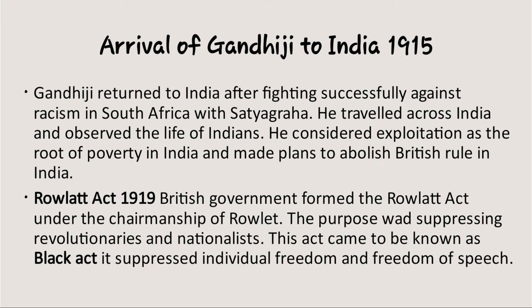The first point is the Rowlett Act. The British government formed the Rowlett Act under the chairmanship of Mr. Rowlett, the Minister of Law, in 1919. As per his suggestion, they framed a law to suppress revolutionaries and nationalists. Whenever a person or group was conducting such activities, they could be arrested and put into jail without any trial. Gandhiji called this act the Black Act. Motilal Nehru considered it a snatching away of argument, appeal, and advocacy. With this rule, the British government got immense power and started arresting people across the country.